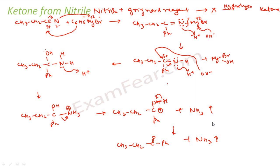That is the reaction mechanism for preparing a ketone from a nitrile. I hope you understood what happened here. I had the nitrile with the triple bond. Nitrogen, being more electronegative than carbon, has a slight negative charge and carbon has a slight positive charge. I have the Grignard reagent where Mg has a plus 2 charge, the alkyl group has a negative charge, and Br has a negative charge. This is step 1, and then step 2 is all the hydrolysis steps.